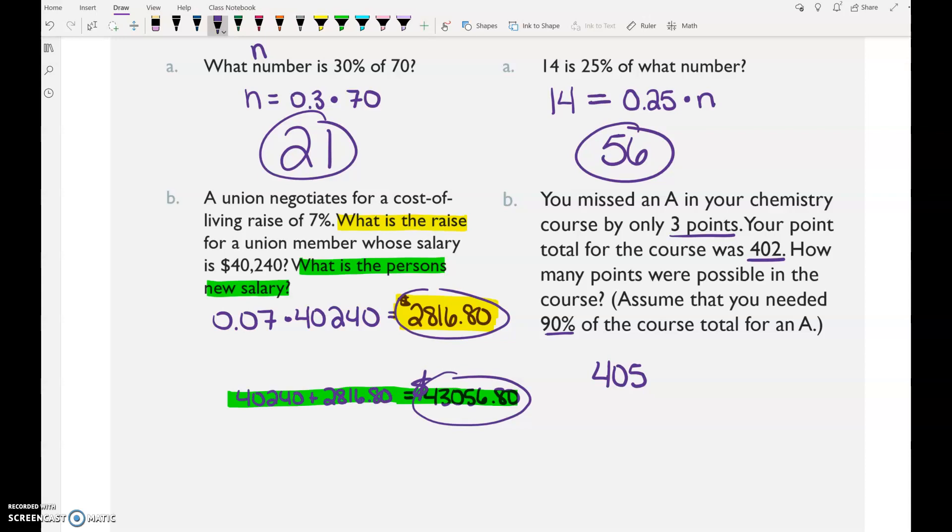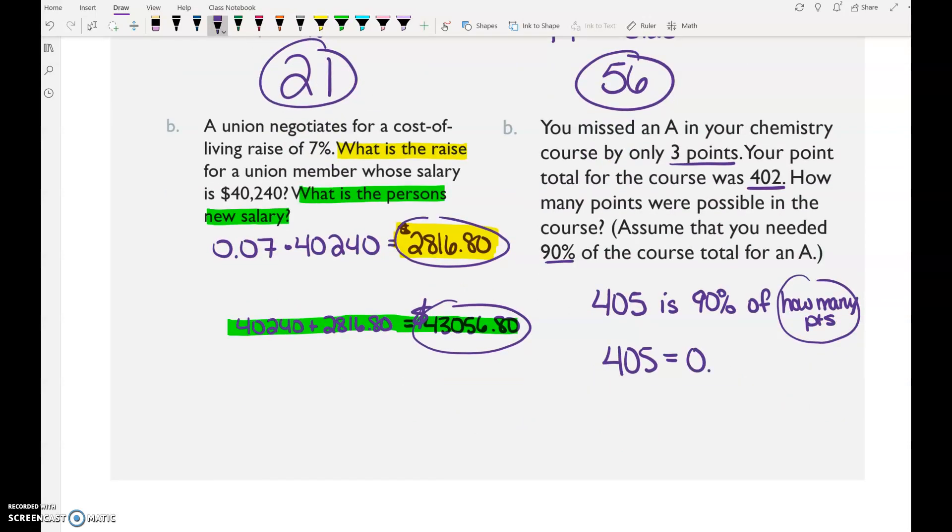Take your score of 402, add the three points that it would take to get an A. 405 points would be an A. So 405 is 90% of how many points? This would be your total number of points possible in the course. So 405, what does is mean? 405 equals 90%, 0.9, of multiply, and then how many points? That's what we're trying to figure out. How would you do that problem? How do you undo times 0.9? Divide by 0.9. And what did you get for the number of points? 450 points. Make sure you write the word points in there because your answer is not complete without a label.